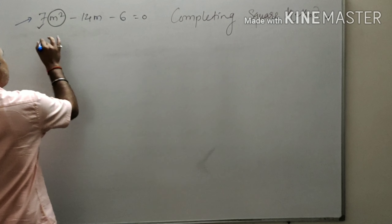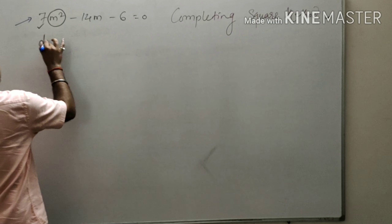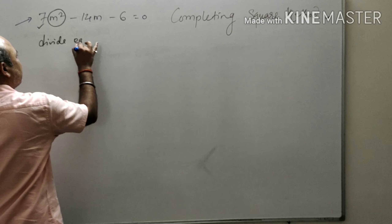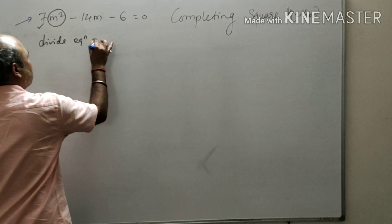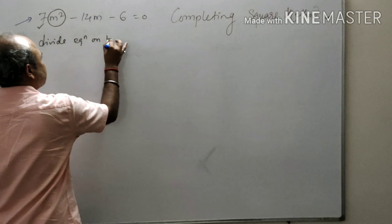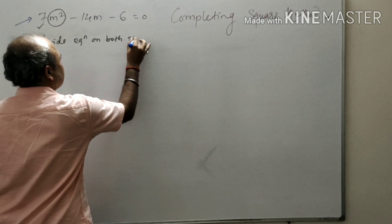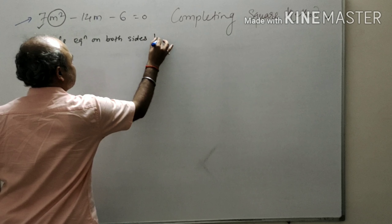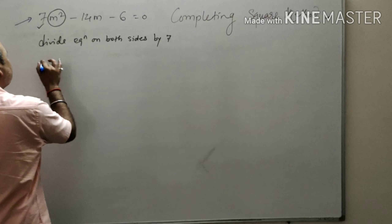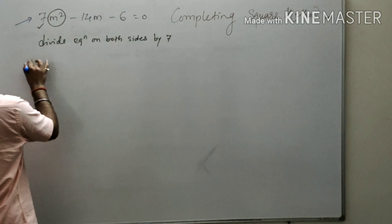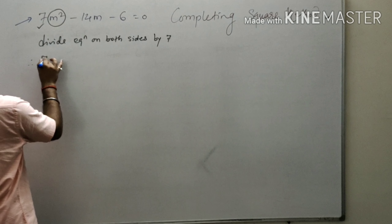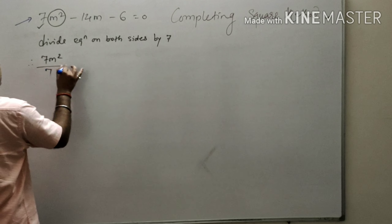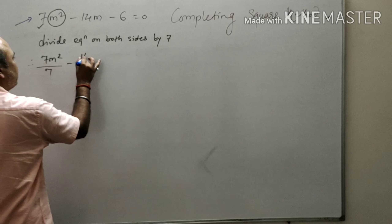Hello students, I am Ranjit sir and today we are going to study quadratic equations and the solution of a quadratic equation by completing the square method. The question is: 7m² - 14m - 6 = 0.